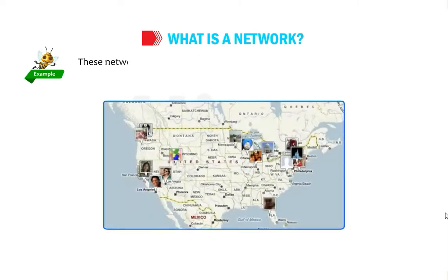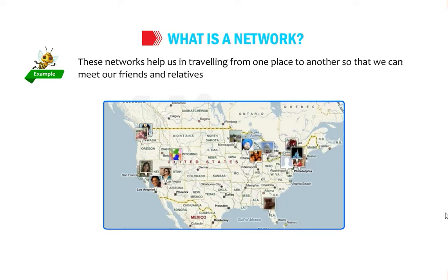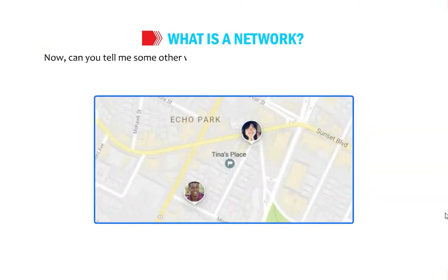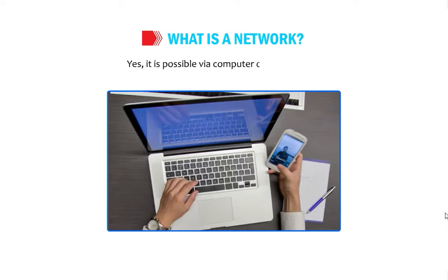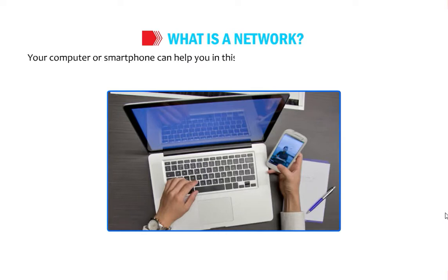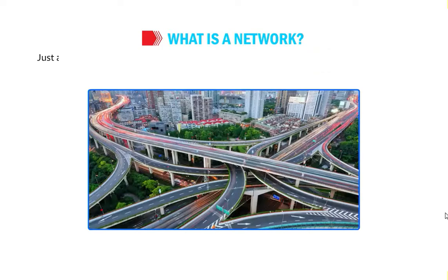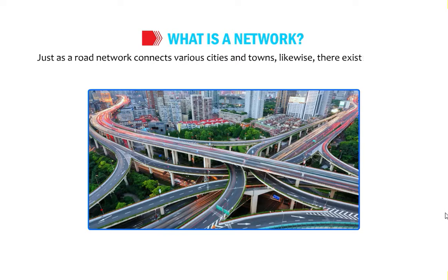These road networks help us travel from one place to another so we can meet our friends and relatives living at far-off places. Can you tell me some other way to interact with your friends and relatives rather than meeting them personally? Yes, it is possible via computer or smartphone — but only if it is connected to the respective device at the other end. Just as a road network connects various cities and towns, likewise there exists a network that connects different computers with each other.